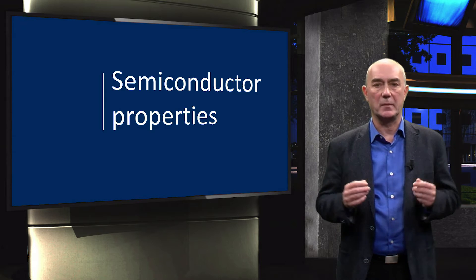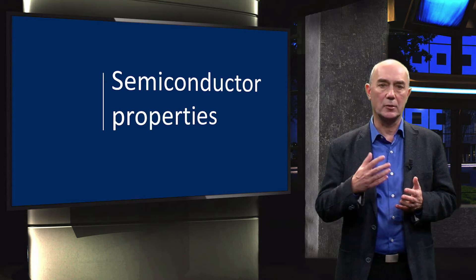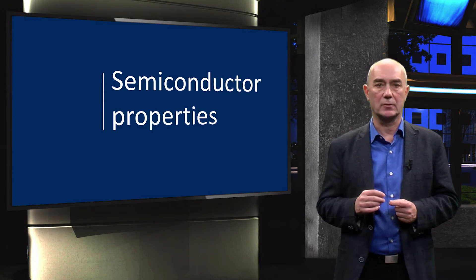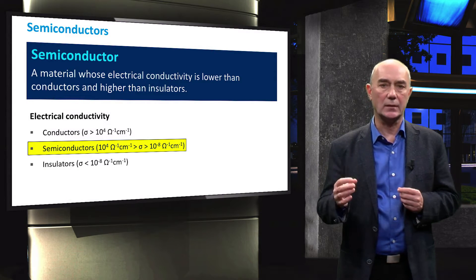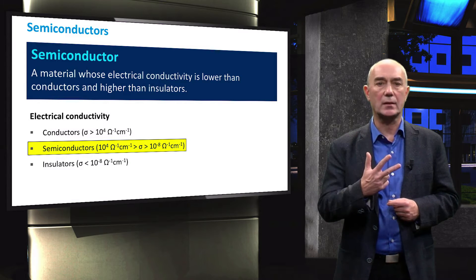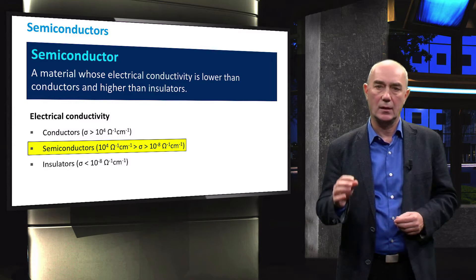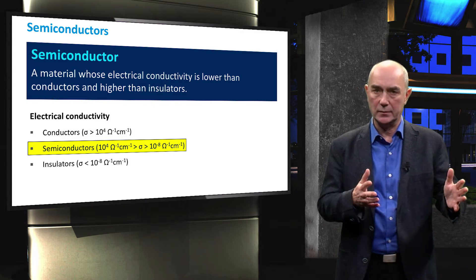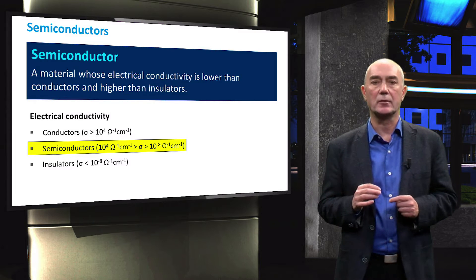But what is a semiconductor? Let's define this term. We will do this by looking at important material properties that define a semiconductor. When we look at materials' ability to conduct electricity, they are generally divided into three classes – conductors, semiconductors and insulators. A semiconductor is a material whose electrical conductivity is lower than the one of a conductor but higher than that of an insulator.